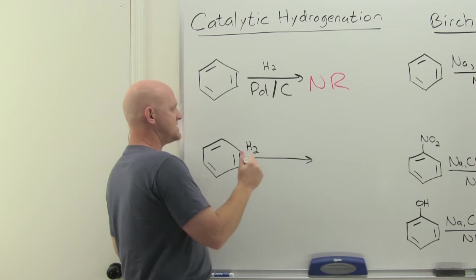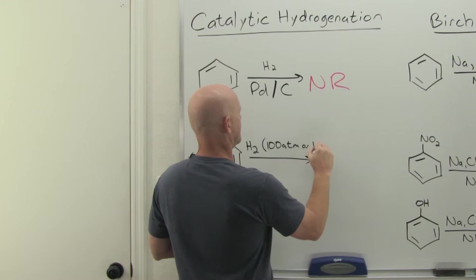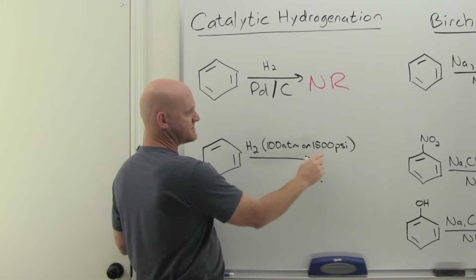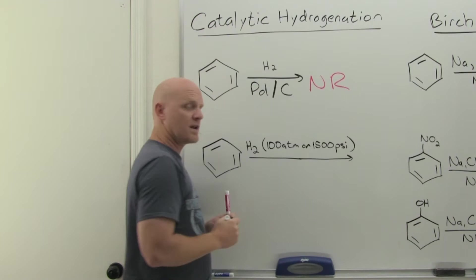However, if we make the conditions a little harsher here, so if we take our hydrogen and we jack up the pressure, and you'll see this expressed usually one of a couple of different ways. In this case, either 100 atmospheres or 1500 pounds per square inch, PSI. You'll see it usually given in one of those two units, depending on the textbook.